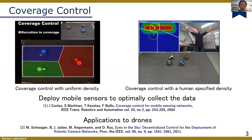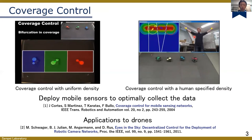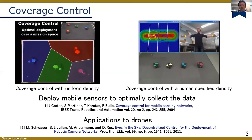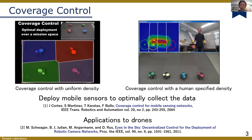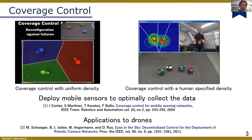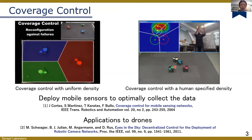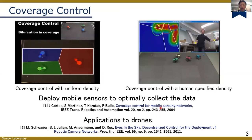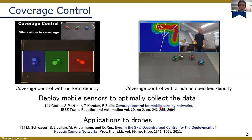Here, the human operator commands which area should be monitored by the robots, and you can confirm that the robots are gathering on the red area specified by the human operator. This coverage control is also applicable to drone networks, and in the following few slides, I would like to explain the coverage control that is also utilized in the proposed method.